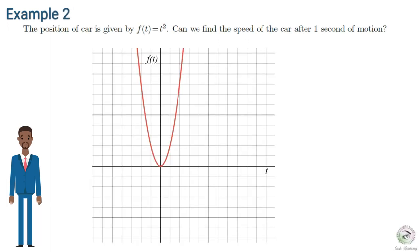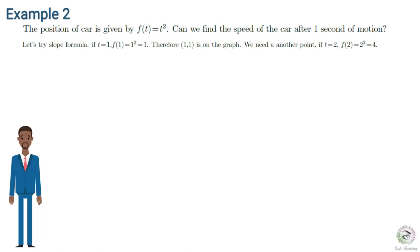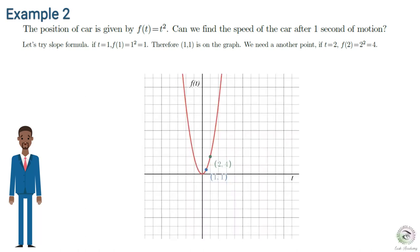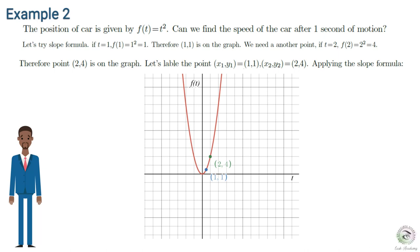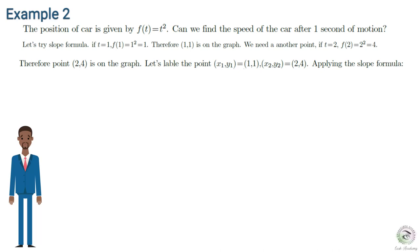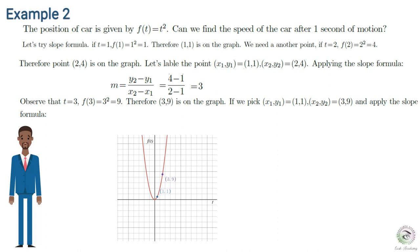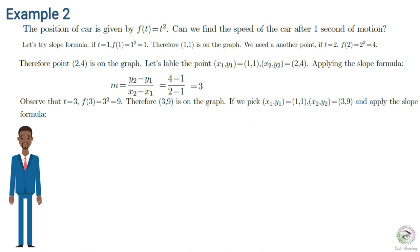Example 2: The position of a car is given by f(t) = t². Can we find the speed after one second of motion? Let's try the slope formula. If t = 1, then f(1) = 1, so the point (1, 1) is on the graph. If t = 2, then f(2) = 4, so the point (2, 4) is on the graph. Labeling (x₁, y₁) = (1, 1) and (x₂, y₂) = (2, 4) and applying the slope formula, we get m = (4 − 1)/(2 − 1), which simplifies to a slope of 3.